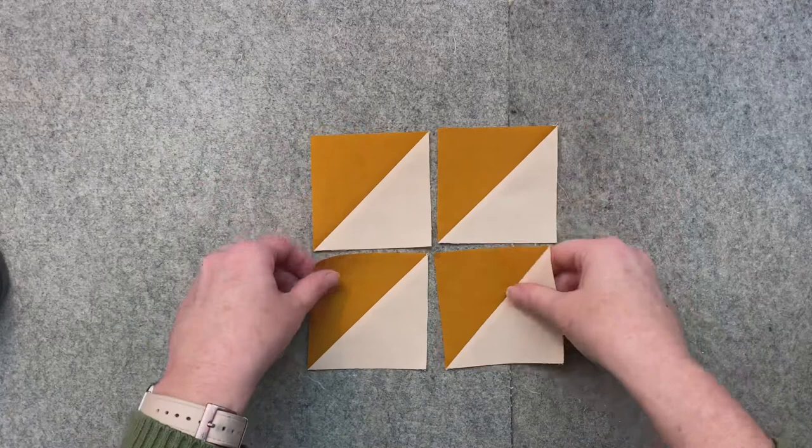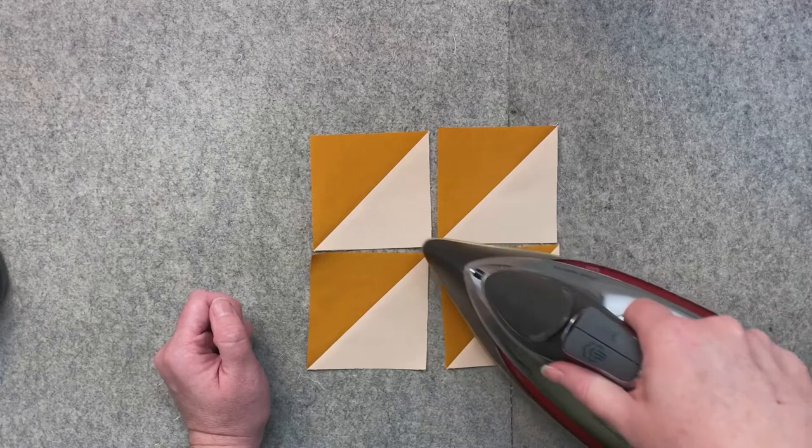And just in case you're new to half square triangles, notice that I didn't take my iron and do this - that warps half square triangles. So it's just up and down, up and down, just like this.